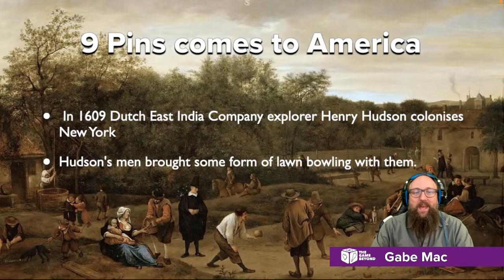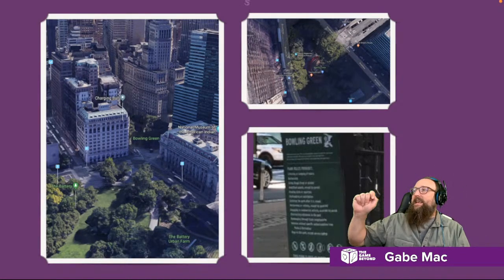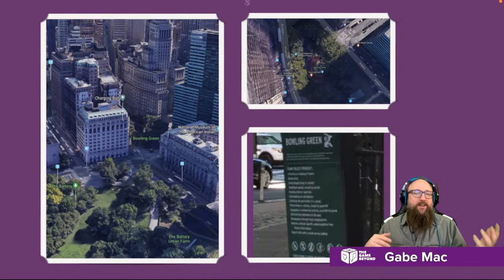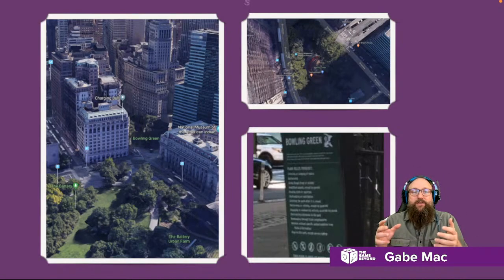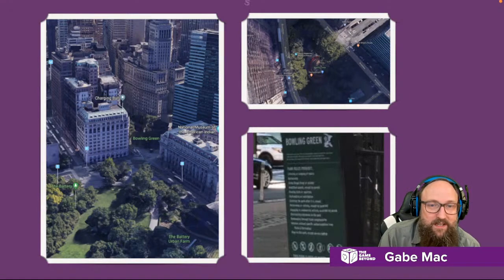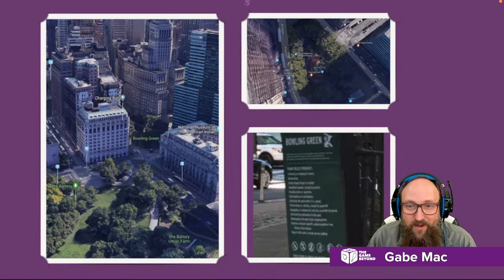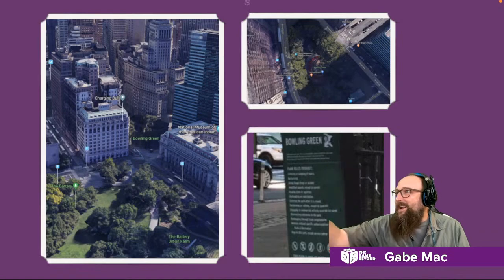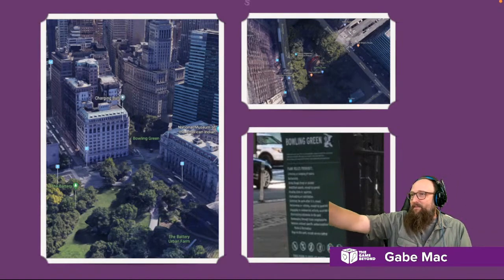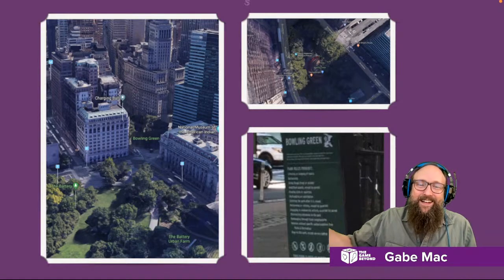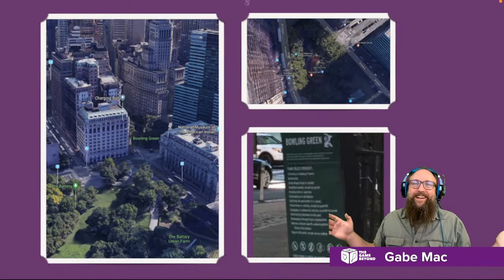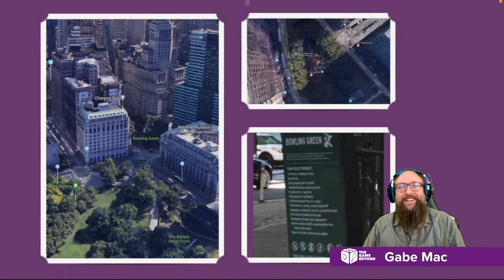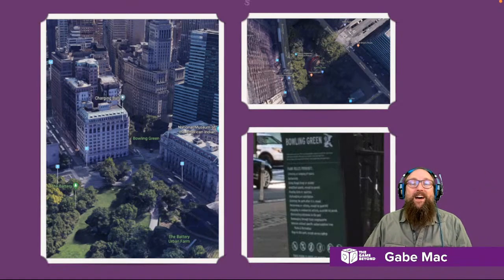Hudson's men brought this rolling ball game with them, and today in New York you can see Bowling Green — the original park from that day where English, Dutch, and German settlers would play bowling together. One of the earliest mentions in serious American literature is by Washington Irving, when Rip Van Winkle awakens to the sound of crashing nine pins. The first permanent American bowling location was in New York, right next to the Charging Bull in Battery Park — and interestingly, you still cannot go onto that grass and play bowls today. So yet again, it is illegal to play there.